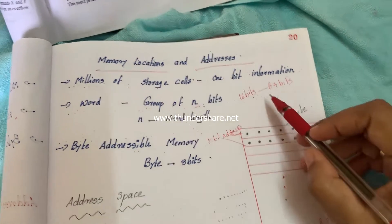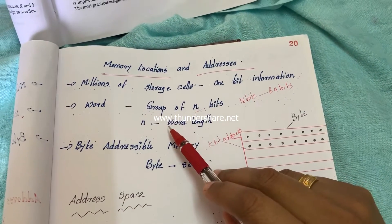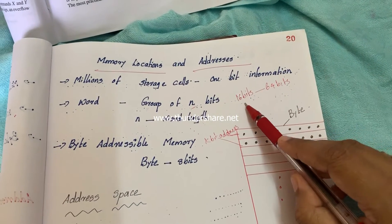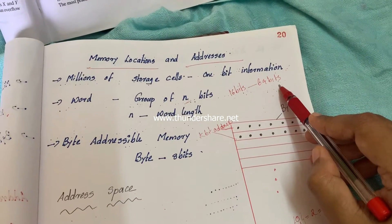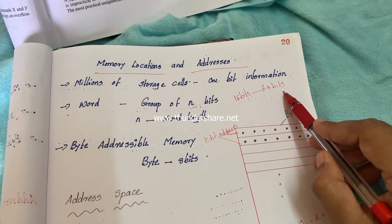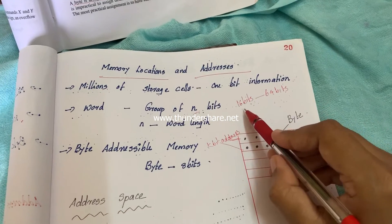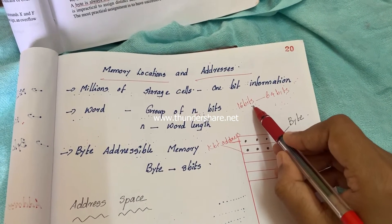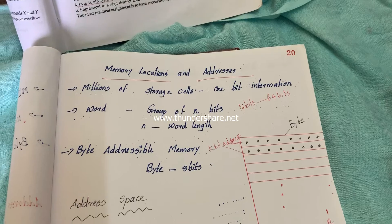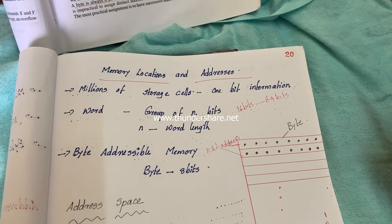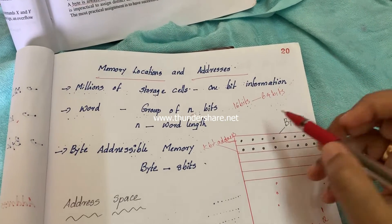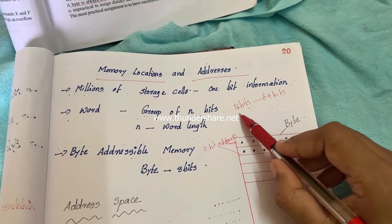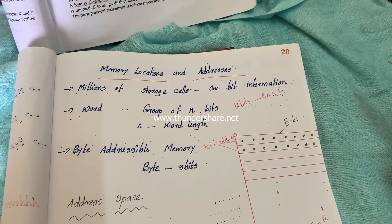In modern computers, this memory word length ranges from 16 bits to 64 bits. Suppose our memory system follows a word length of 16 bits. This indicates that each memory store or memory retrieval operation can access 16 bits of information at a time.